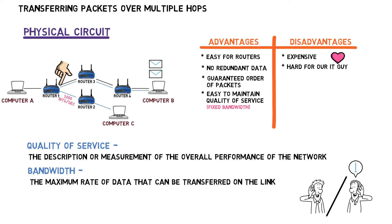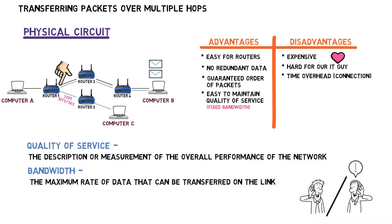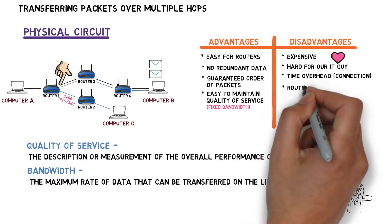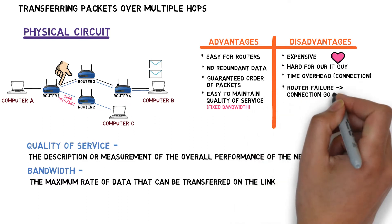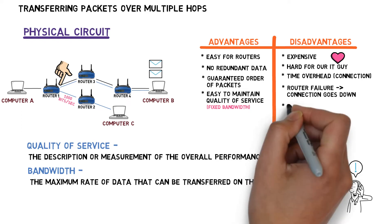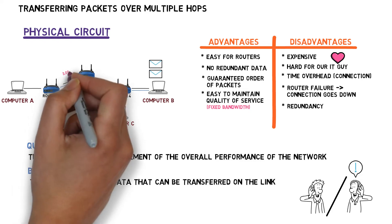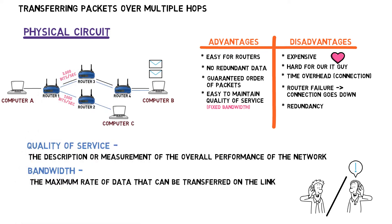This implementation also comes with a time overhead — it takes time to establish every connection, time that we have to wait before sending our first packet. Also, what happens if a router is damaged? The entire connection will be lost and we'll have to set up the connection again, paying the overhead once more. There is also a lot of redundancy in this model, since the entire bandwidth of a link is allocated for a single connection. If A and B want to communicate and we allocate a link between routers 1 and 3 that can handle 3000 bits per second, but neither A nor B have anything to send, this cable's bandwidth is completely wasted as it cannot be used for other connections.